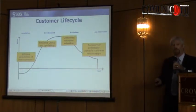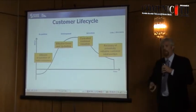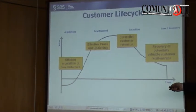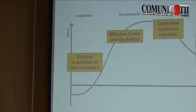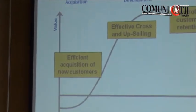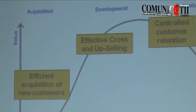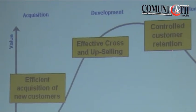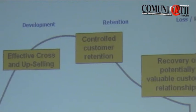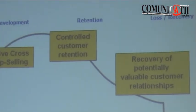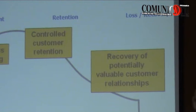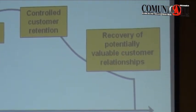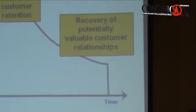Through the customer life cycle, there are marketing objectives you want to achieve: efficiency in terms of acquisition and the costs you outlay; the effectiveness of cross and upselling to drive that value up as quickly as possible; and control — getting the right decisions made in terms of retention, making sure you're retaining the ones you want to retain.